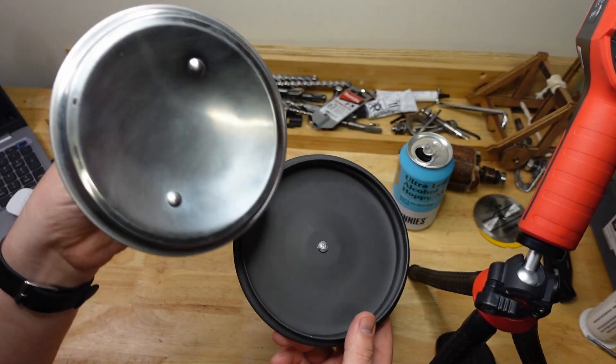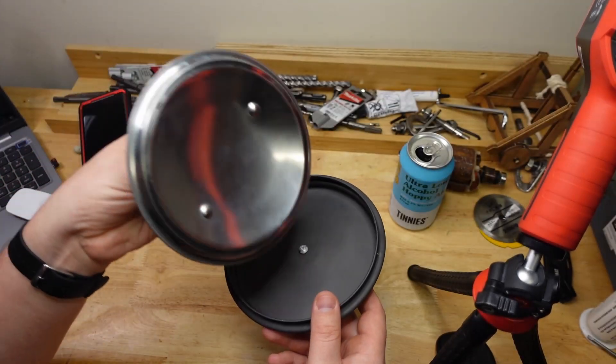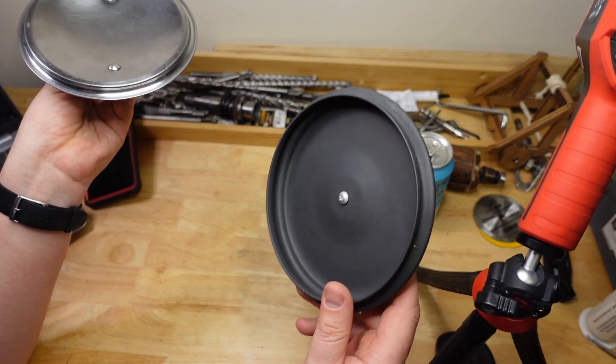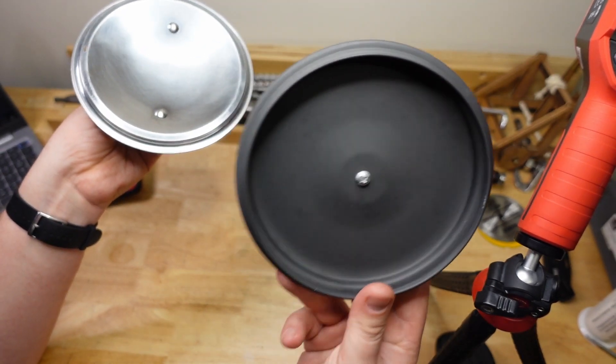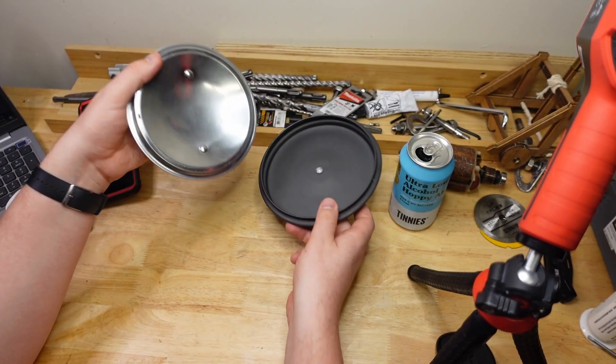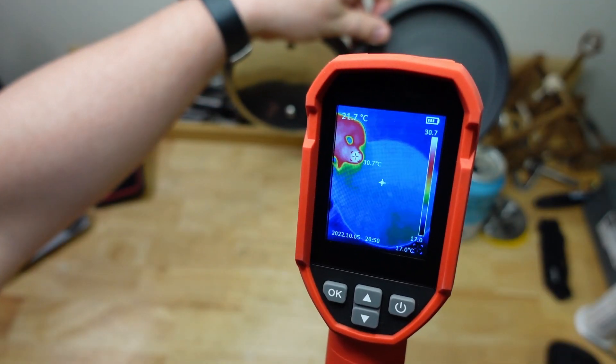If we look at these two pot lids, this one's very shiny. This one's very dull. This one reflects a lot of heat, as we've seen. This one won't. So it's probably going to be a lot easier to measure the temperature of the actual metal with something like that. There you go. 22 degrees.